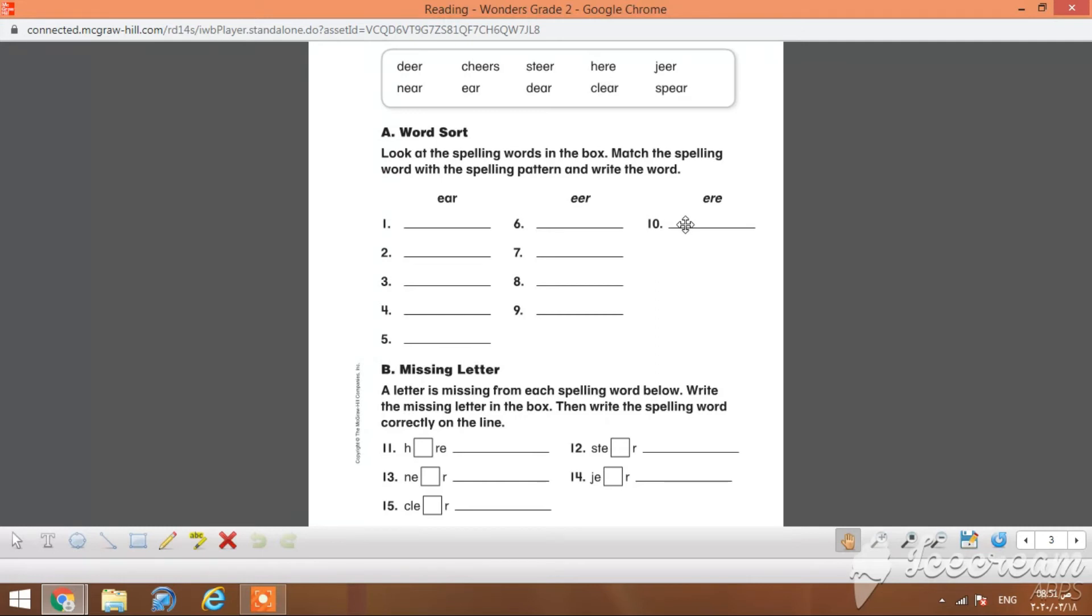Missing letter: A letter is missing from each spelling word below. Write the missing letter in the box and write the spelling word correctly on the line. As you can see here, one letter in each word is missing. It is here, steer, near, gear, and clear. Of course, you can use the list of words that may help you identify the missing letter: E here, E here, E here, A here, and A here.